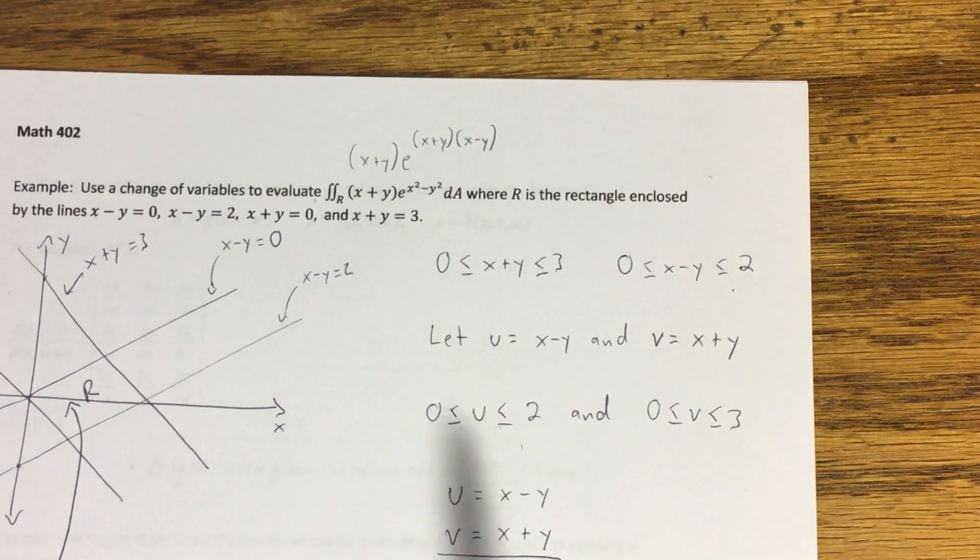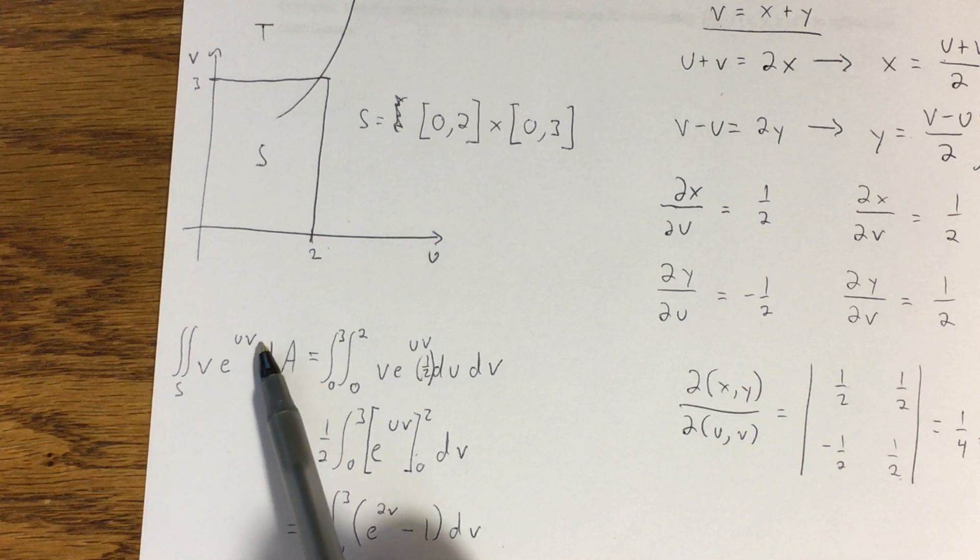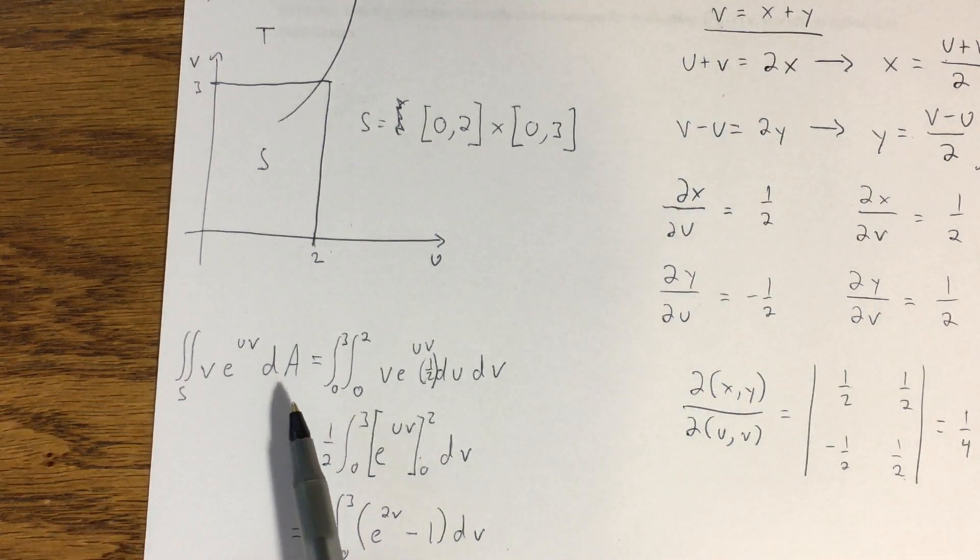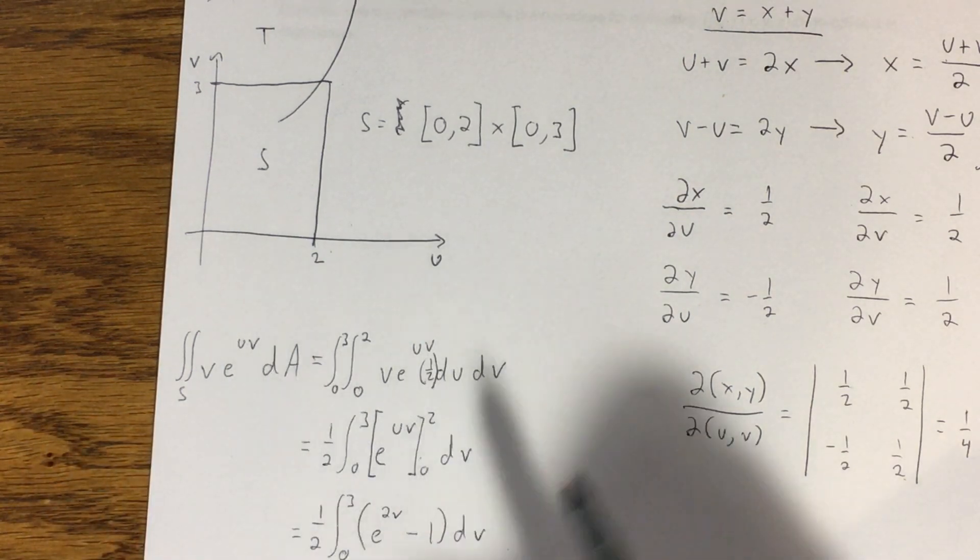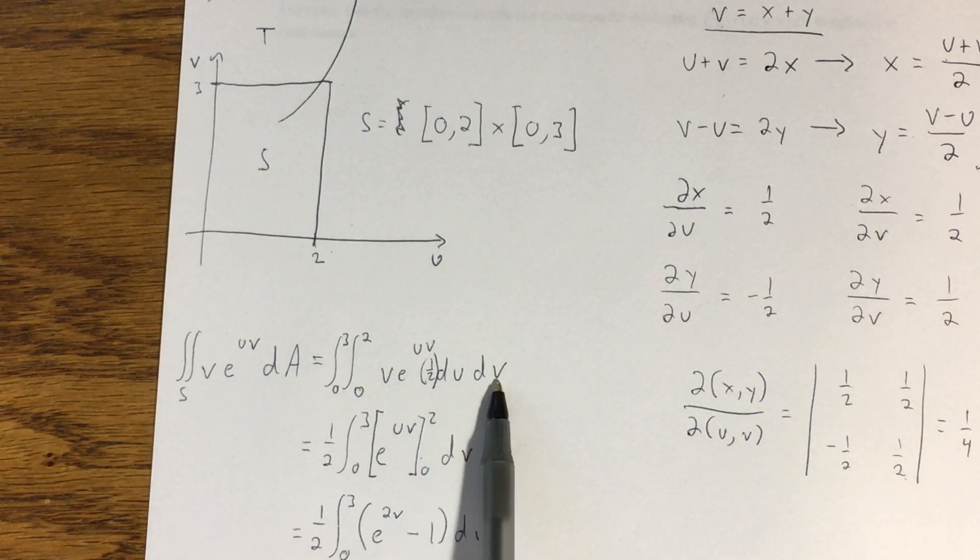So with the appropriate substitutions, that integrand becomes this, VE to the U-V. What I didn't do yet is I didn't change the DA into my Jacobian times DU-DV. My Jacobian was 1 half. You see I kind of squeezed that in right there. DU-DV.